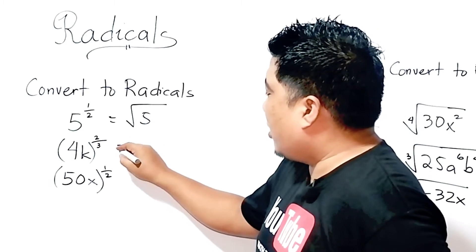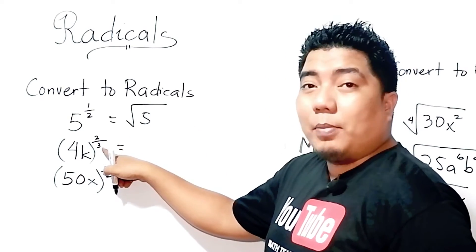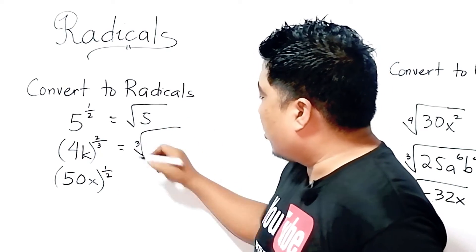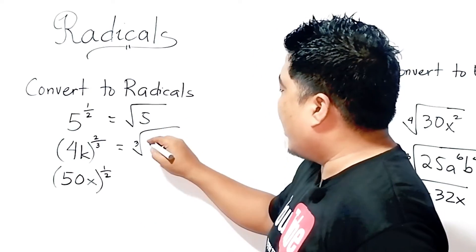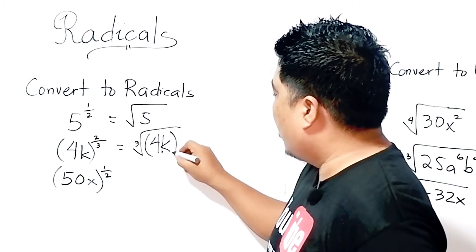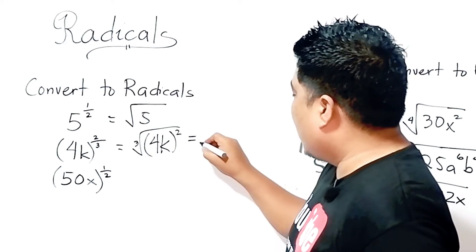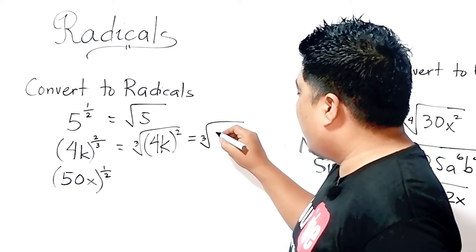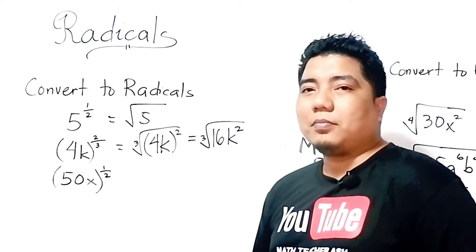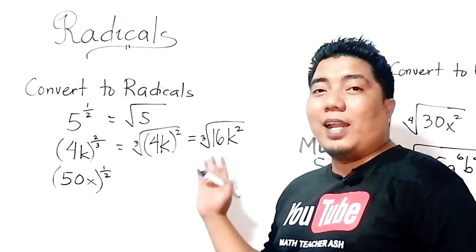How about 4k to the power of 2 thirds? Since our denominator is 3, that will become a cube root. Then we write our radicand, k, to the power of 2. If you want to simplify this, it will become the cube root of 16k squared. That is your final answer.